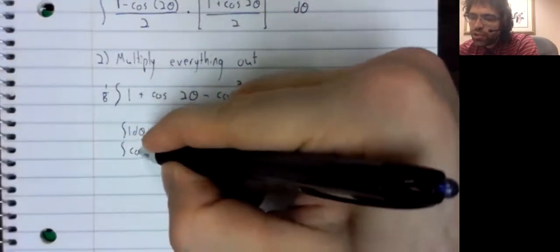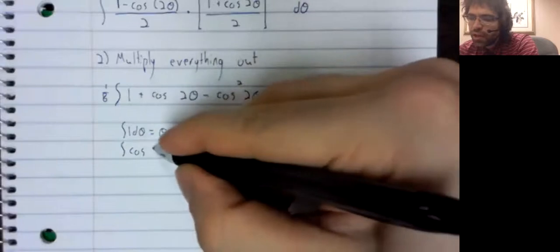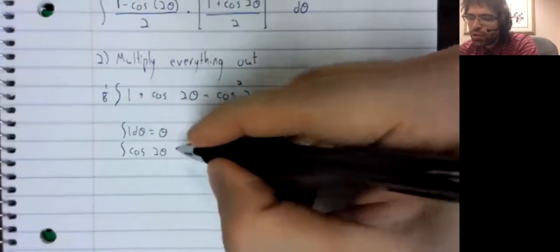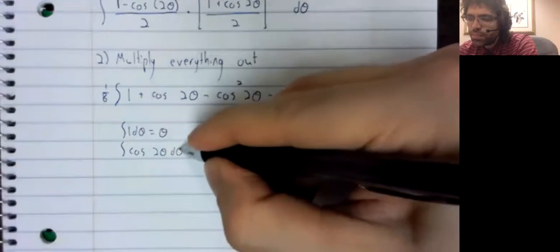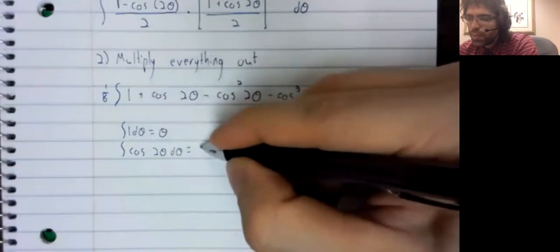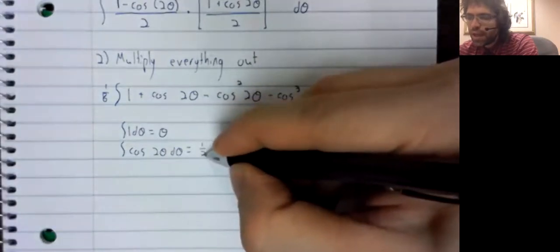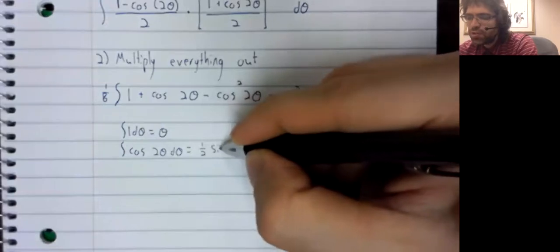When we integrate the cosine of two theta, we'll get one half the sine.